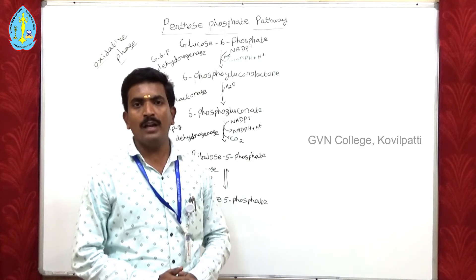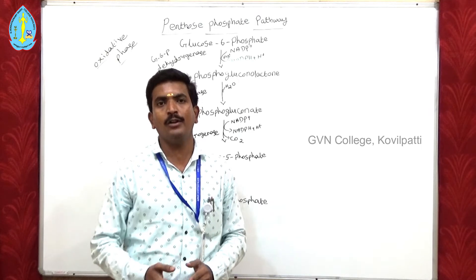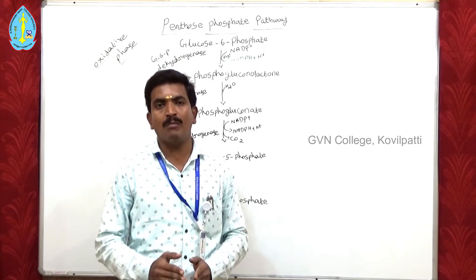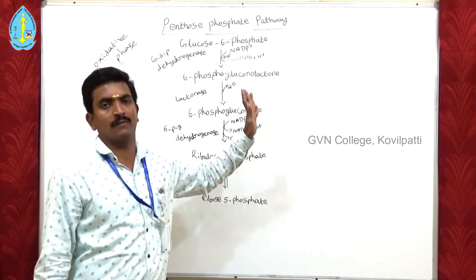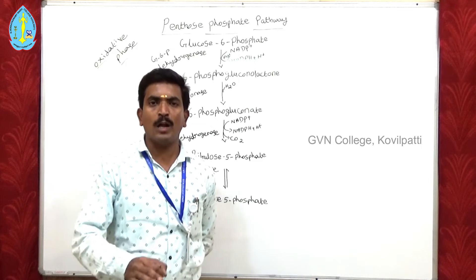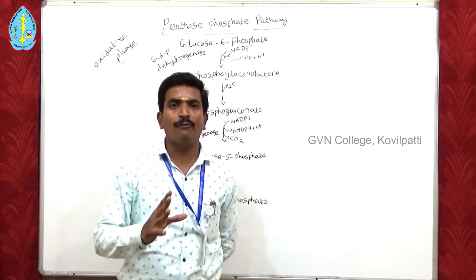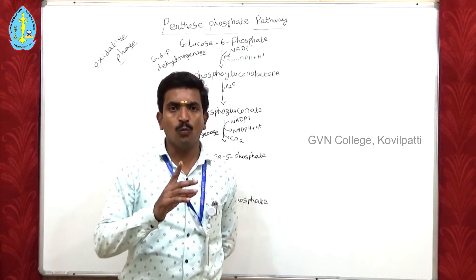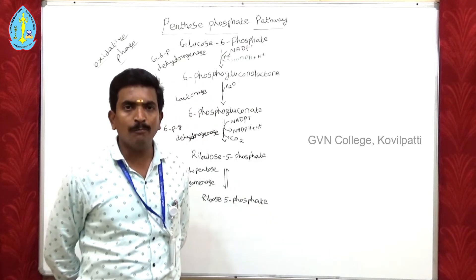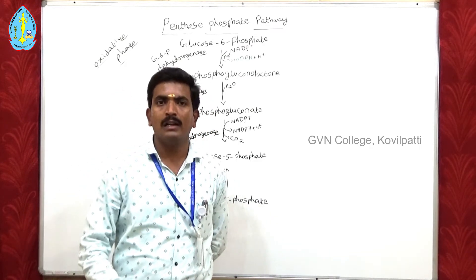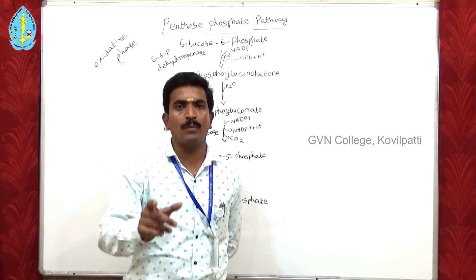The Pentose Phosphate Pathway means the glucose 6-phosphate, which is produced in glycolysis, may enter into or break down through some other process. One of those processes is the Pentose Phosphate Pathway, because the hexose phosphate sugar glucose 6-phosphate breaks down and forms a 5-carbon sugar and a 1-phosphate. That 5-carbon sugar pathway is called the Pentose Phosphate Pathway, otherwise known as the Hexose Monophosphate Pathway or the Phosphogluconate Pathway.